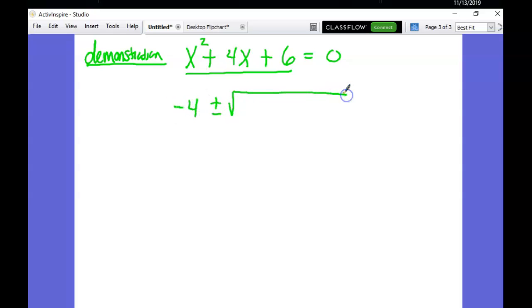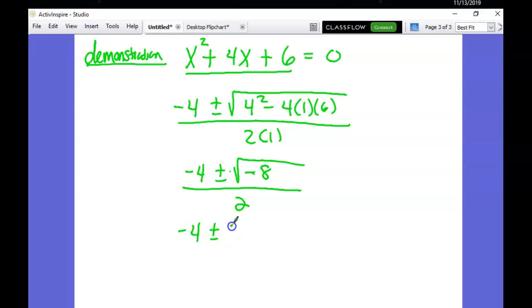You could try factoring, but it won't work because it's not factorable. The only other way to find the roots of a quadratic when it equals zero is by doing the quadratic formula. So we're going to go ahead and do that. X equals negative B plus or minus the square root of B squared minus 4AC all over 2A. And then we go ahead and just work it out from there. Negative 4 plus or minus the square root of 16 minus 24 over 2. In this case, we're going to take out the negative and we're going to break down the 8.